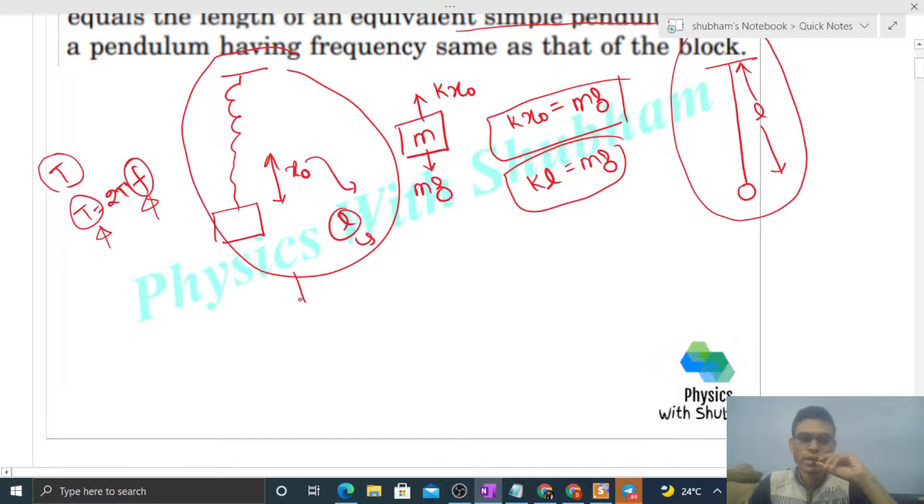Time period for spring block system will be 2π under root of m by k, and here for the pendulum it will be 2π under root of l by g.